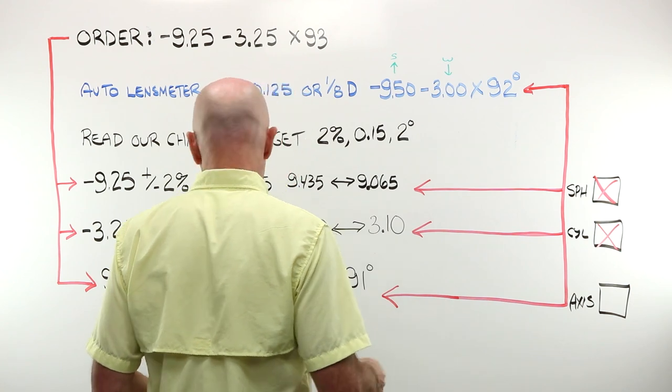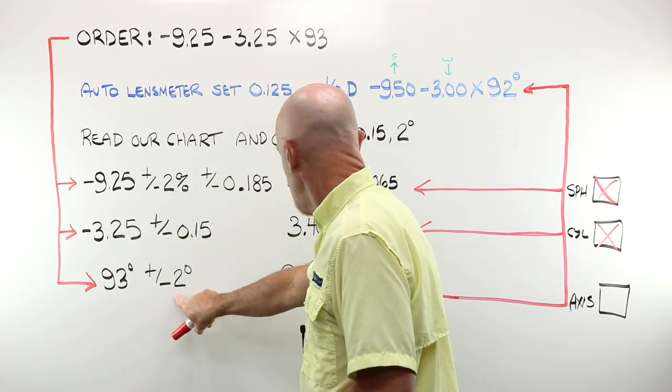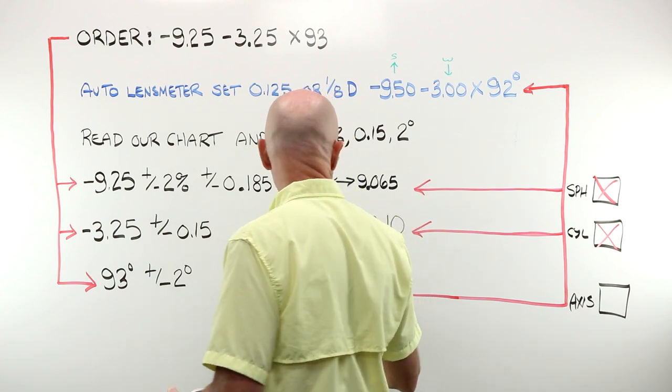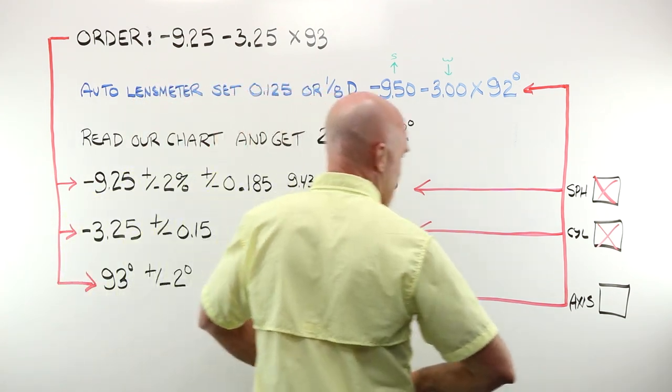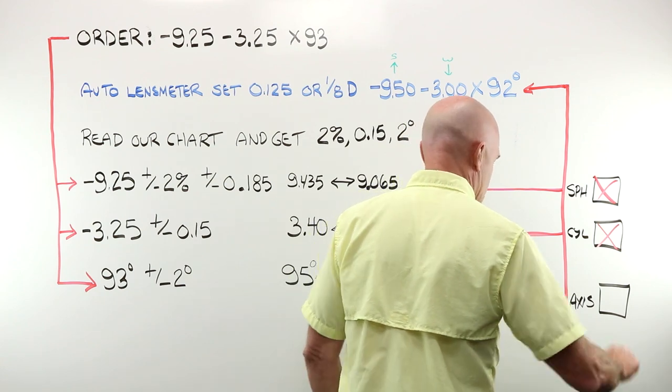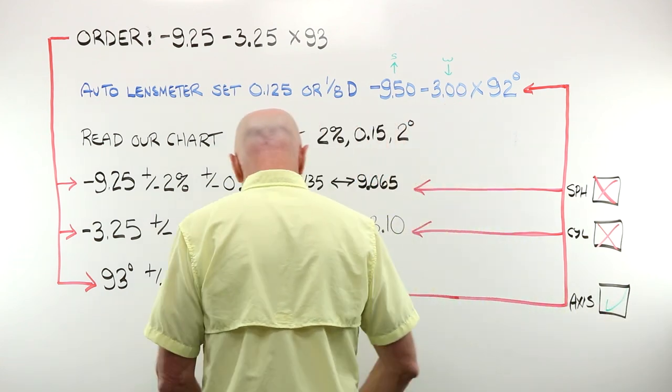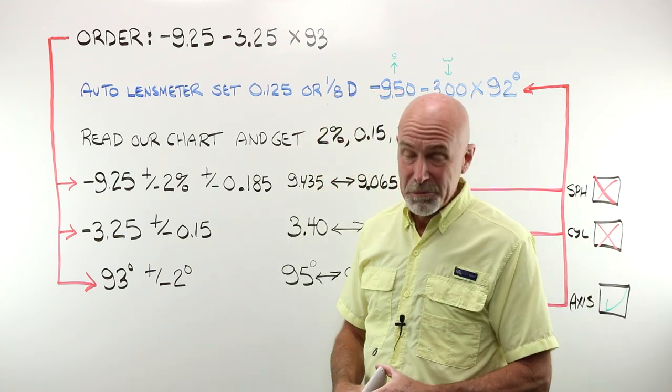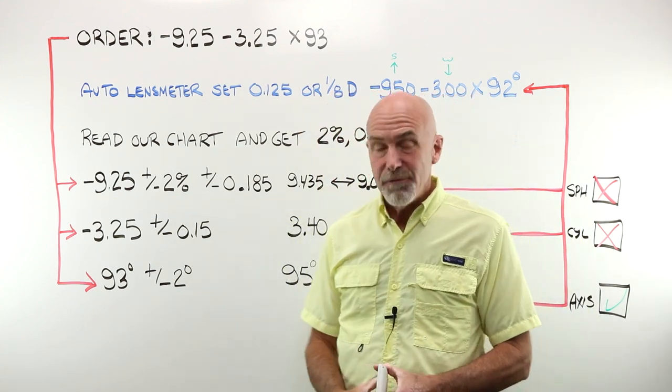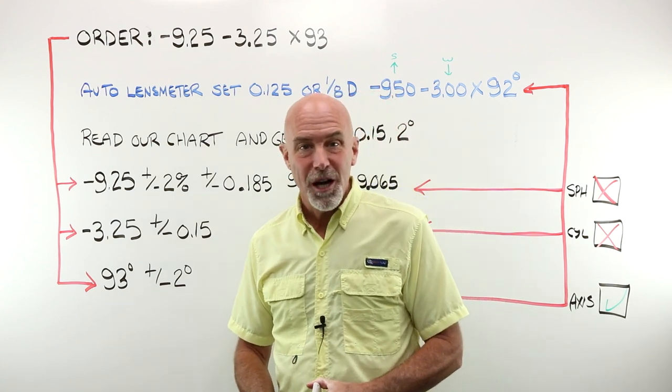Would Axis have made it? Just for curiosity's sake, 93 plus 2 is 95, 93 minus 2 is 91. Hey, we have a winner. Okay, our Axis actually would have been okay, but well, too bad. That job would go back to the lab to be remade. You could not call the customer and tell them to come and pick up their glasses. They fall outside of tolerance.